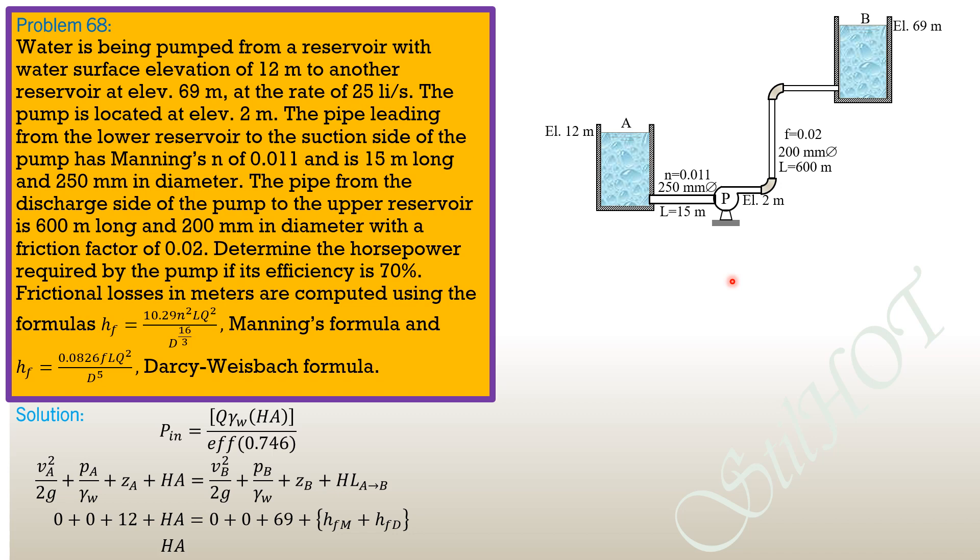So head added by the pump equals 57 + h_f (Manning) + h_f (Darcy-Weisbach). h_f by Manning's formula can now be computed: 10.29 × (0.011)² × 15 × (0.025)² / (0.25)^(16/3). So frictional loss by Manning's in this pipe is 0.01897 meters.